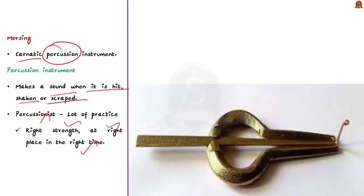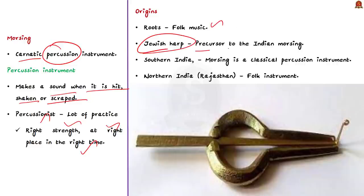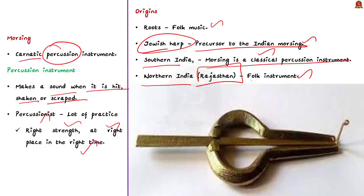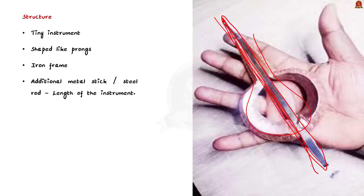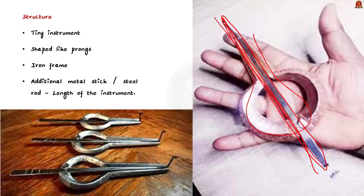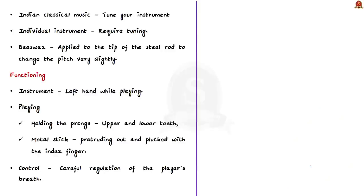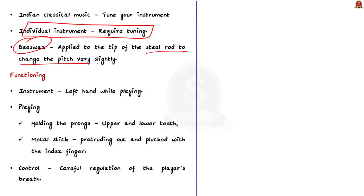The origins of morsing lie in folk music, and the Jewish harp is identified as a precursor to the Indian morsing. In the southern part of India, morsing is a classical percussion instrument, whereas in the northern part — especially in Rajasthan — it is a folk instrument. It is a tiny instrument shaped like prongs with an iron frame and an additional steel rod running through its length. A different morsing is required for different tonal centers, and beeswax — a product made from the honeycomb of the honeybee — is traditionally applied on the tip of the steel rod to change the pitch slightly.